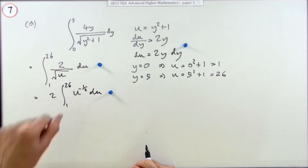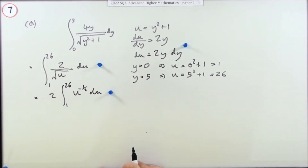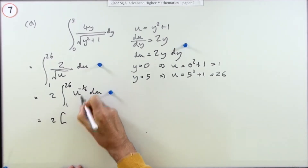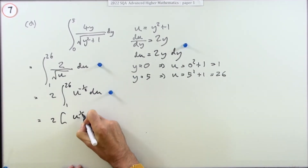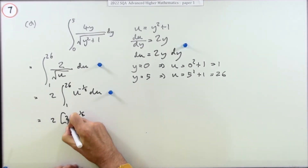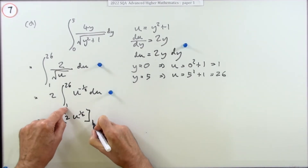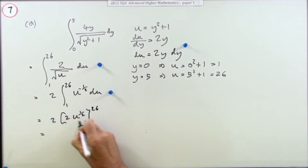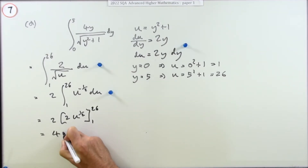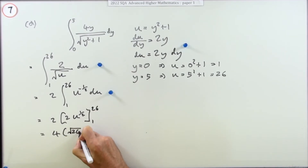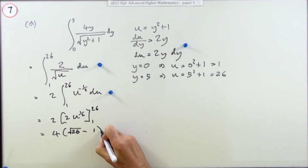The 2 is a factor that comes out, and √u in the denominator is just u to the negative half. That's the third mark — leaving it as 1 over √u is exactly the same. Now evaluate: add 1 to the power giving u to the half, divide by a half (multiply by 2). Evaluating from 1 to 26 gives 4(√26 − √1), which simplifies to 4(√26 − 1) for the last mark.